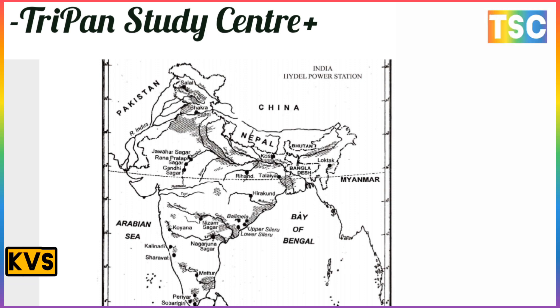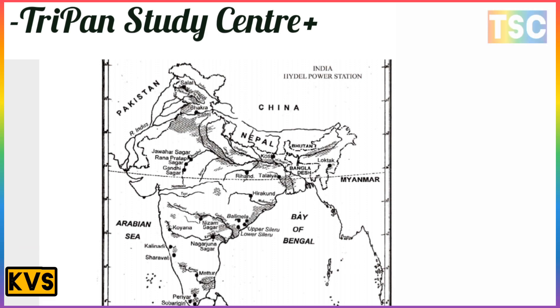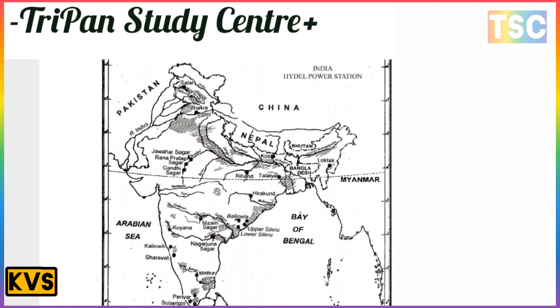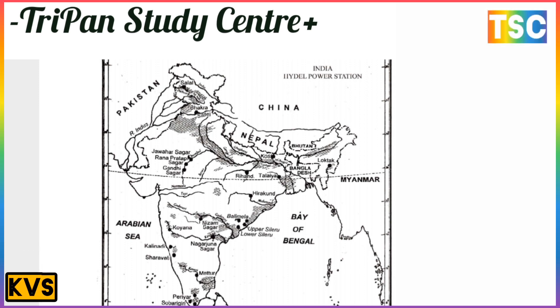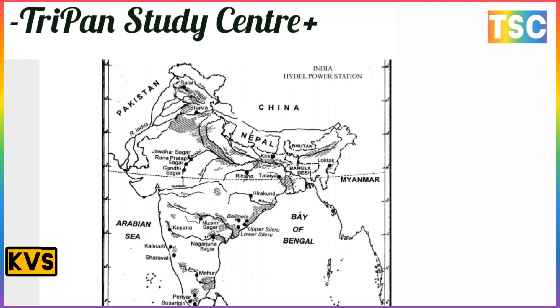Other hydro power stations shown on the map include Koshi, Chiladejali, Srihaan, Nagar, Arjun, Sagar, and Mathur.